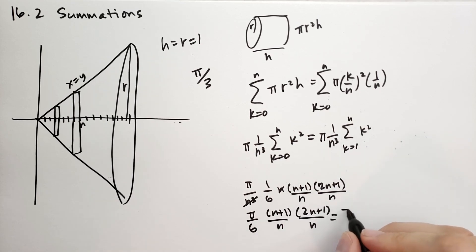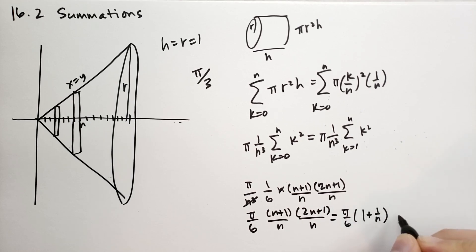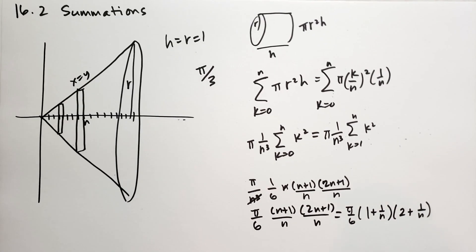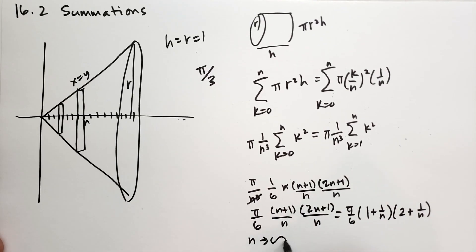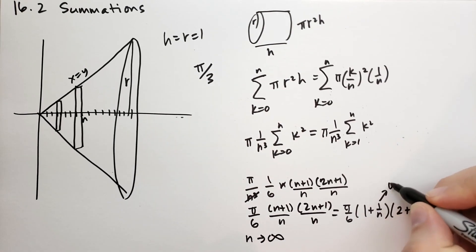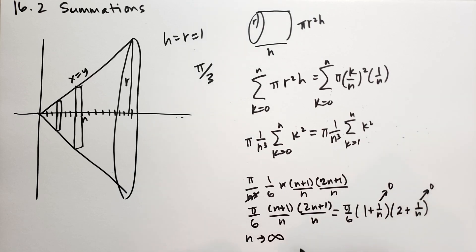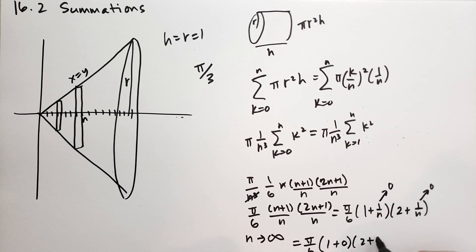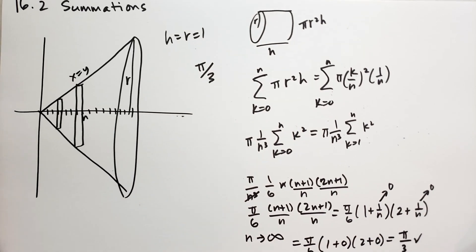Distributing the terms we get pi over 6 times (1 plus 1 over n) times (2 plus 1 over n). Now as n tends towards infinity — and this is where the calculus argument comes from — these 1/n terms go to 0. So what we're left with is pi over 6 times (1 plus 0) times (2 plus 0), which is just pi over 6 times 2, so pi over 3. And that's the solution we anticipated.